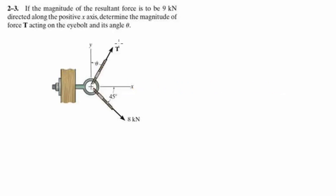For more videos visit ForTheSakeOfEducation.com. Problem 2.3: If the magnitude of the resultant force is to be 9 kN directed along the positive x-axis, determine the magnitude of the force T acting on the eyebolt and its angle theta.